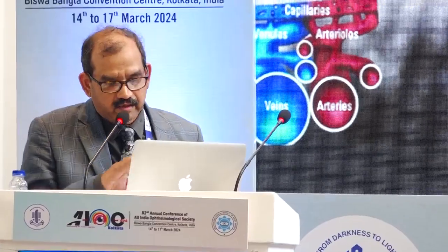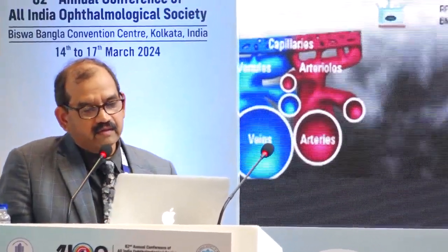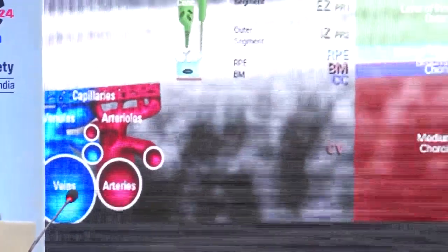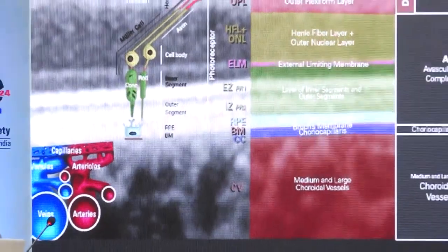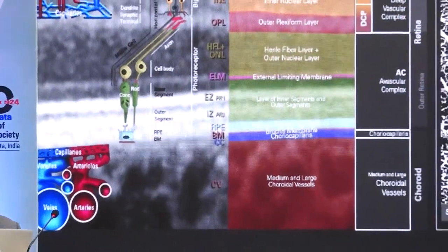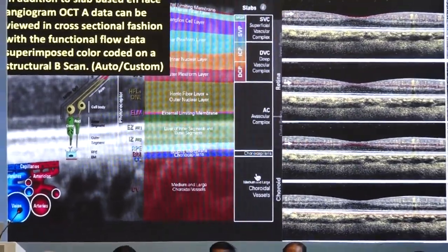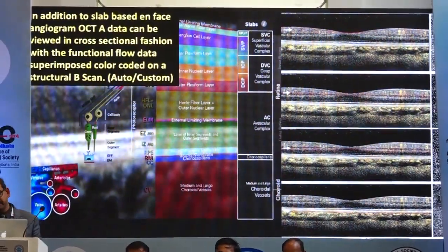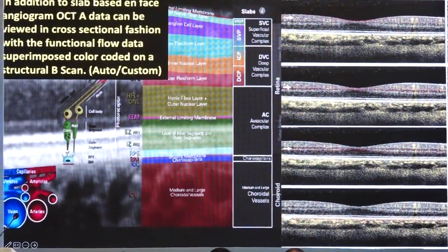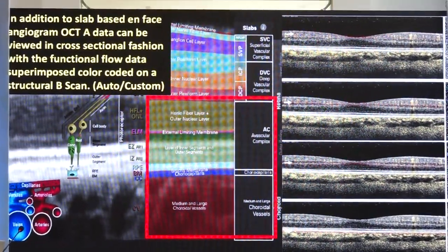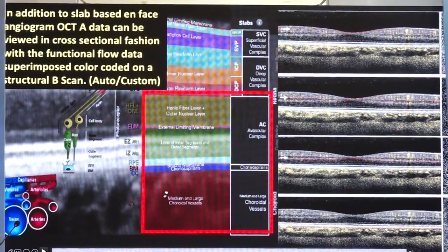This is just a small repetition of what Aminder and Dr. Ritesh have told, but on the left hand side there are cross sections of retinal layers and en-face maps of vascular patterns at different levels, developed in OCT angiography. In addition to the slab-based en-face angiogram, OCT data can also be viewed on the cross section. The yellow dots here — this is a Heidelberg machine where the flow is depicted in yellow dots — are the areas where the flow is present.